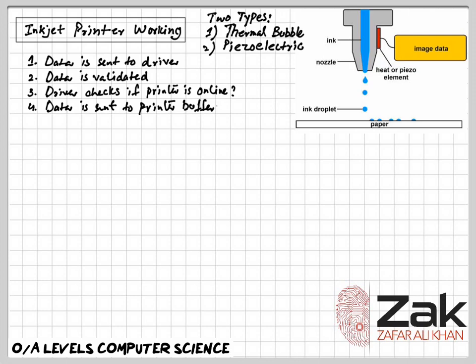The data is stored in the temporary memory of the printer called the printer buffer. A sheet of paper is fed into the main body of the printer.